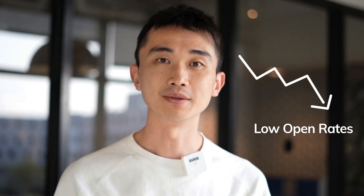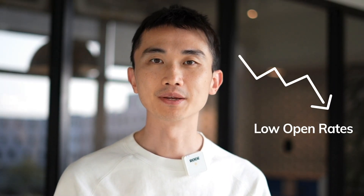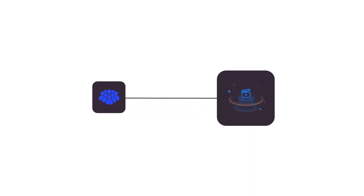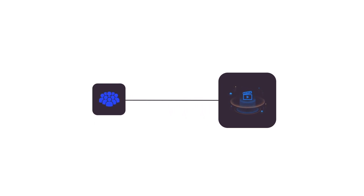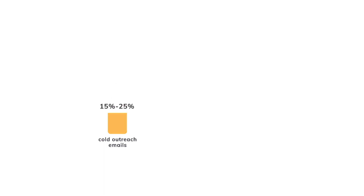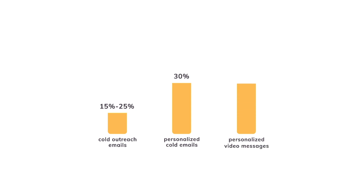You end up with low open rates, and it can be a real time suck, especially when you're trying to create personalized videos for everyone. But fear not — Heyjen provides you with solutions. Using videos is an incredibly effective way to connect with your audience and build stronger relationships. Research shows that while cold outreach emails typically have open rates of around 15% to 25%, well-crafted personalized cold emails can bump that up to 30% or more. But here's the kicker — personalized videos can take those open rates to a whopping 45% or even higher.